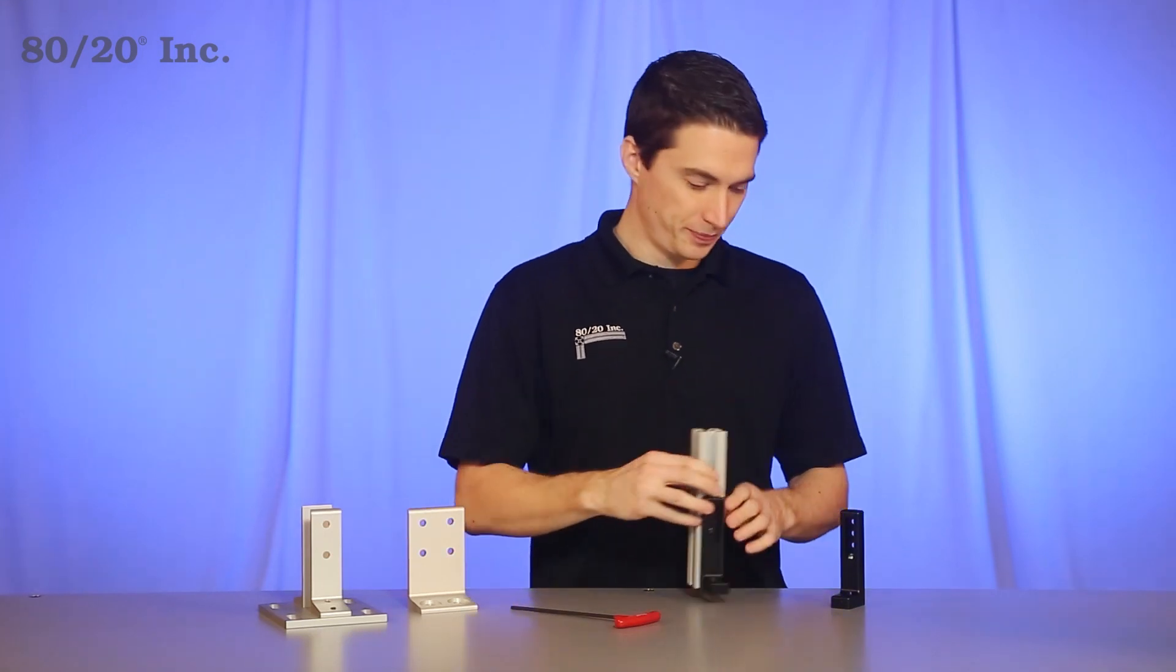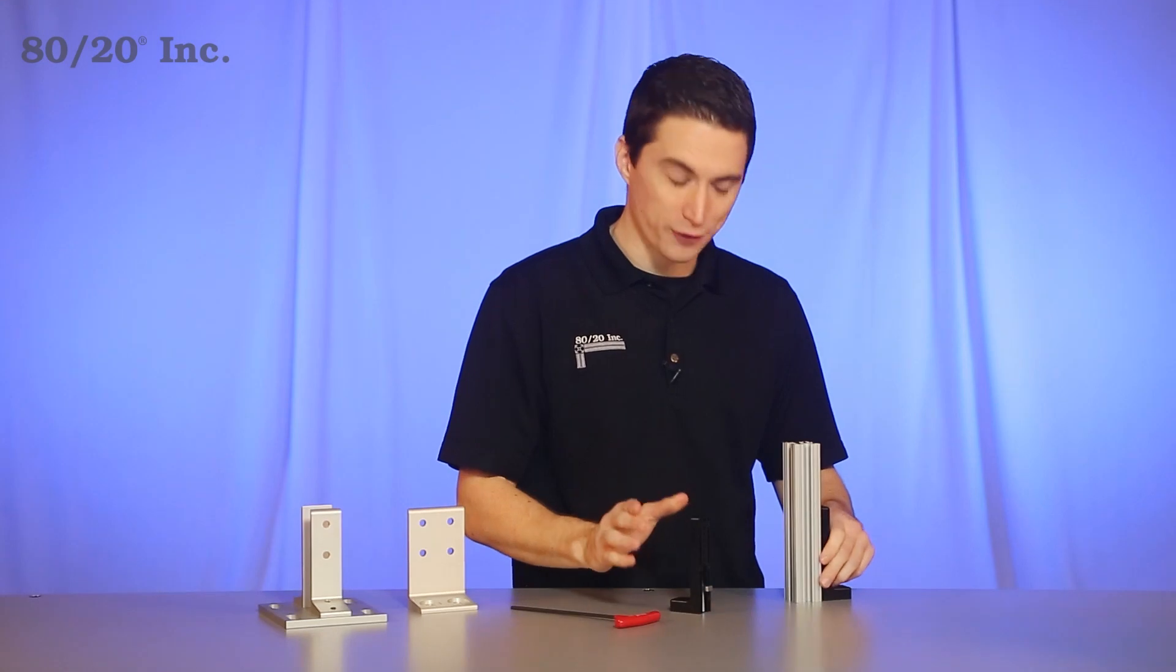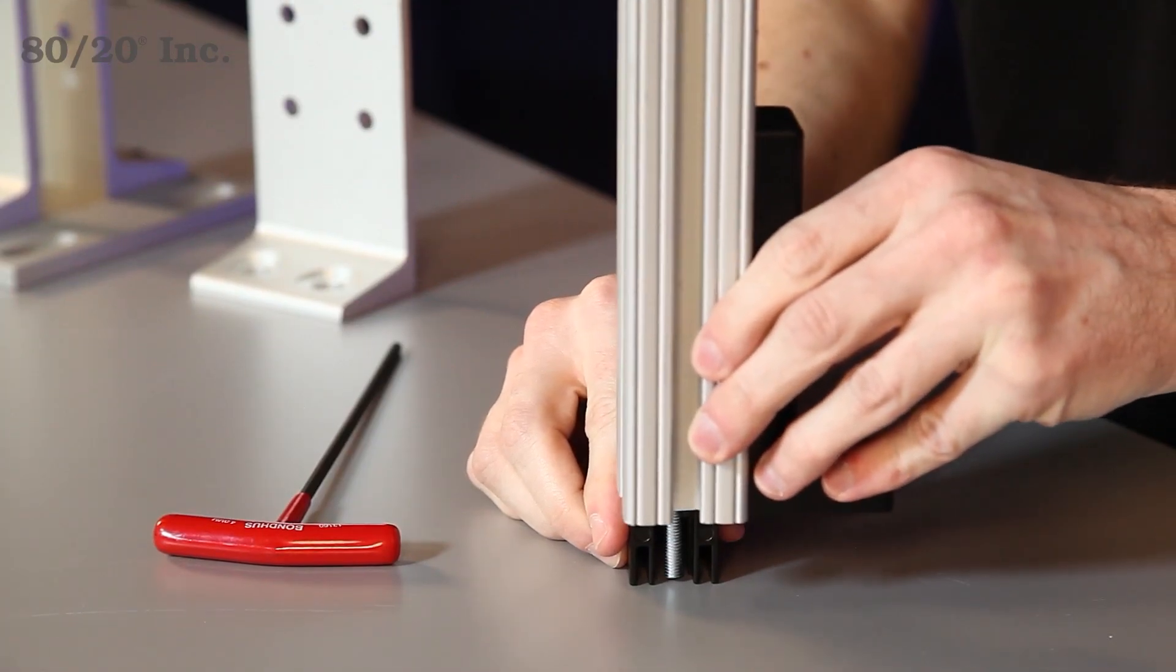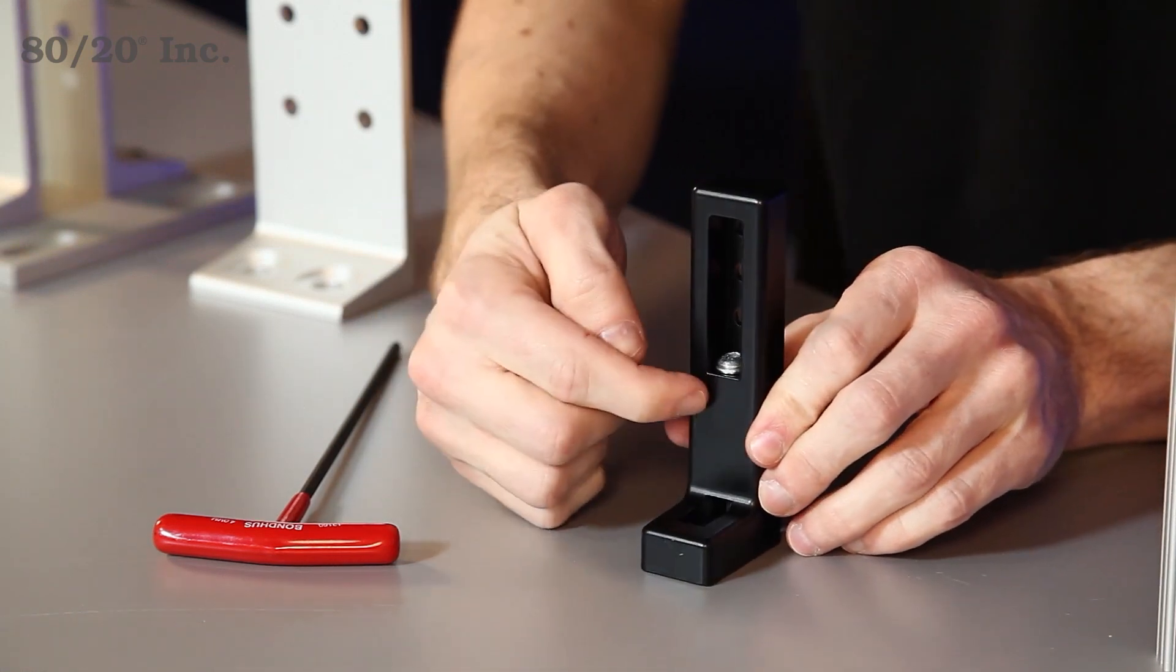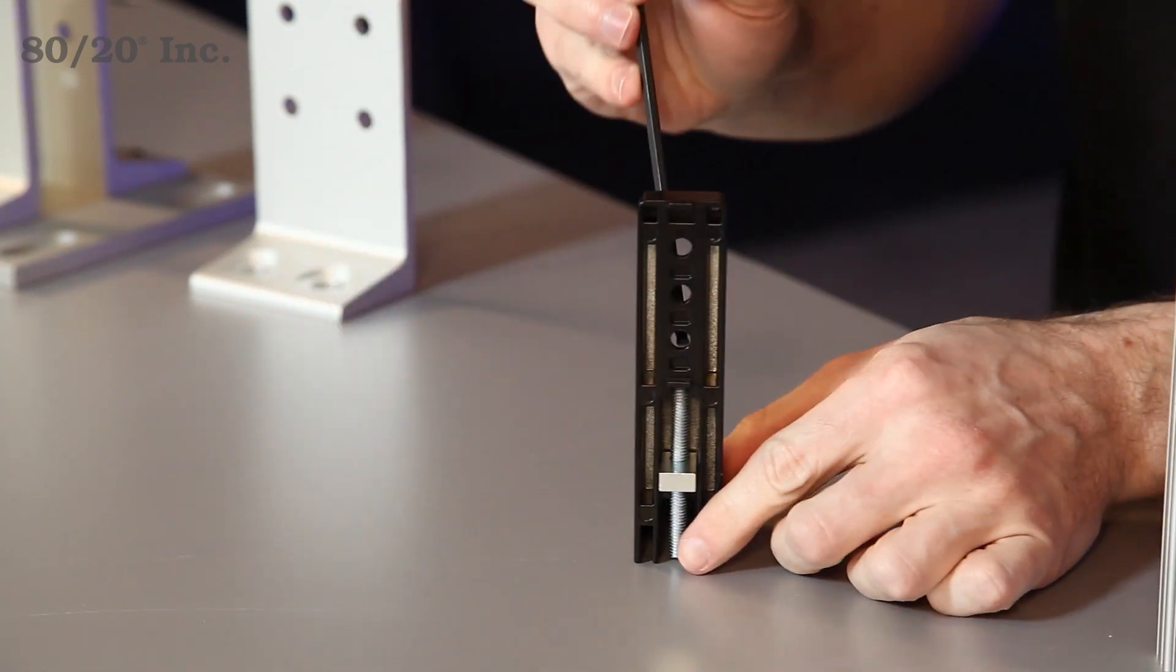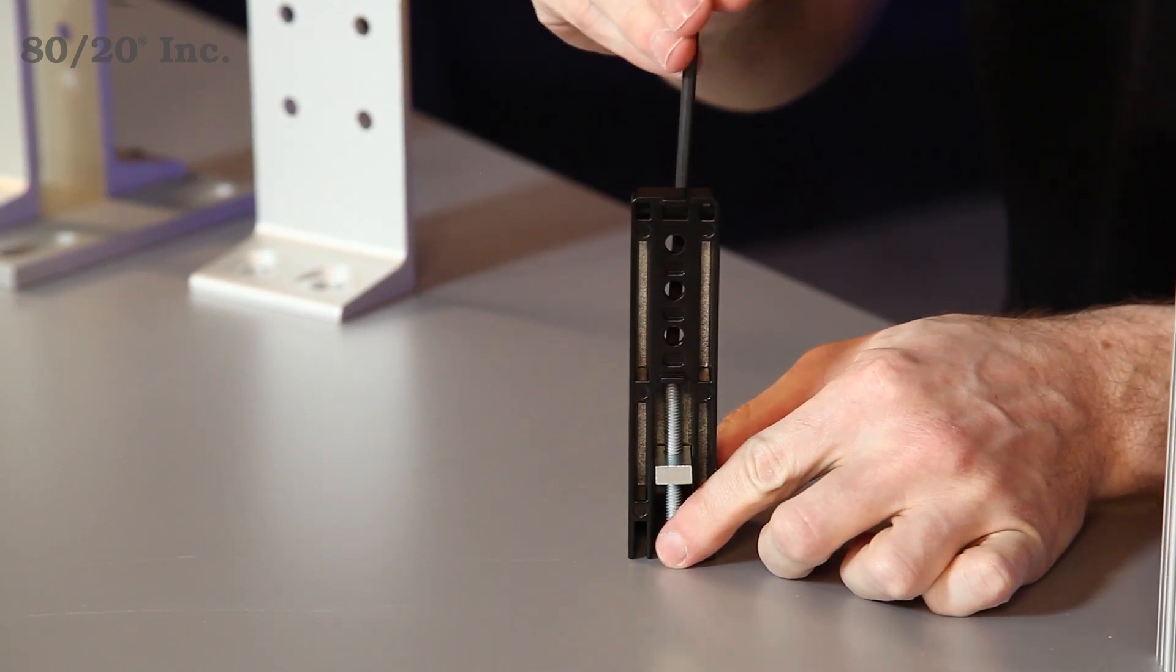One last thing we want to show you is a version where you can adjust the height a little bit more. The only difference is the profile is going to rest on this T-nut on the back side. If you want to adjust the height, you simply take this bolt on the front side, take your wrench, and raise or lower it to the desired height that you need.